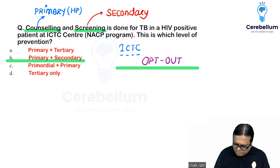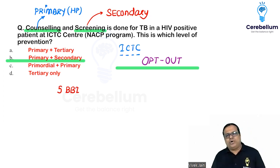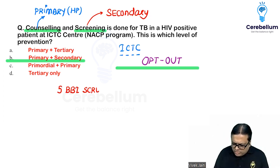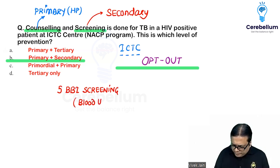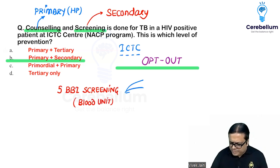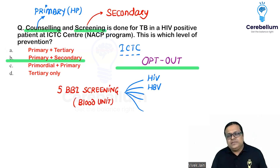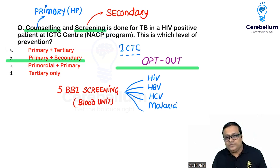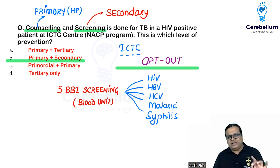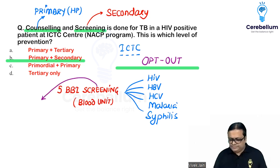The next question covers the five blood-borne infections (BBI) screened in every donated blood unit. The five diseases are: HIV, Hepatitis B, Hepatitis C, Malaria, and Syphilis — not toxoplasmosis, cytomegalovirus, kala-azar, or dengue.